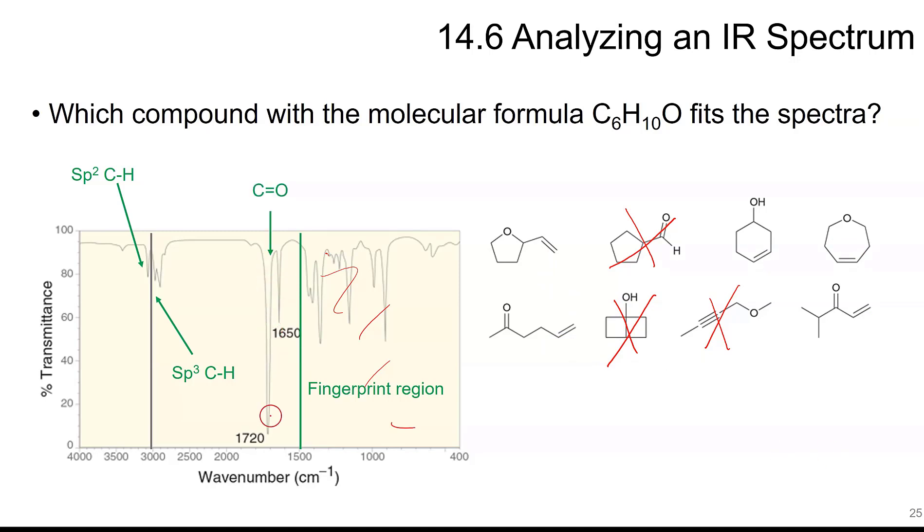This right here is a C double bond O, the 1720. So I can rule out this. This is not a C double bond O, this is not a C double bond O. So we have the carbonyl here with the double bond on the end or this conjugated one. So one thing if you remember back, this ketone shows up around 1720. If you have a conjugated ketone right here, which is the double bond next to the ketone, those show up around 1680. So this is our best candidate for the IR spectra here.